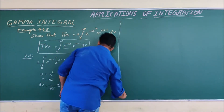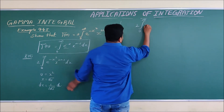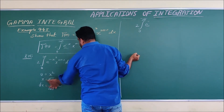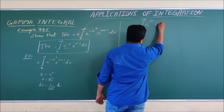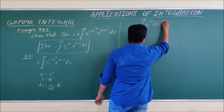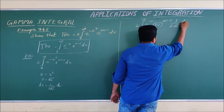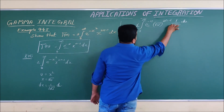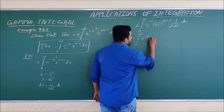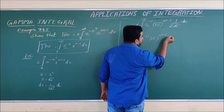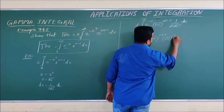Substituting into the integral, we get the integral from 0 to infinity. Since x equals root u, e to the power of minus x squared becomes e to the power of minus u. And x to the power of 2n minus 1 becomes root u to the power of 2n minus 1. The dx is replaced by 1 over 2 root u, times du. The factor of 2 outside and the 1 over 2 from dx cancel each other.